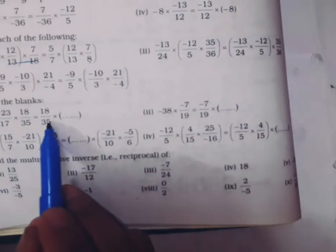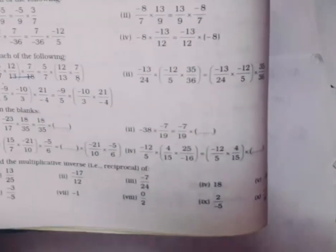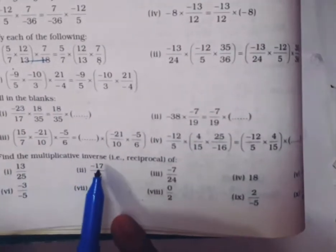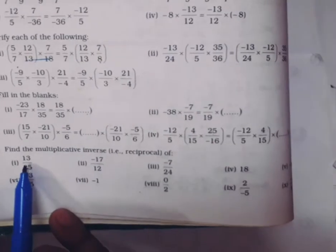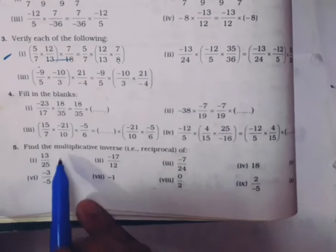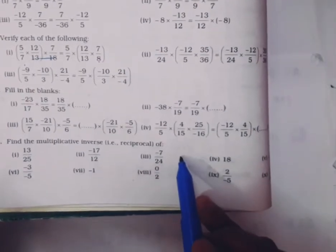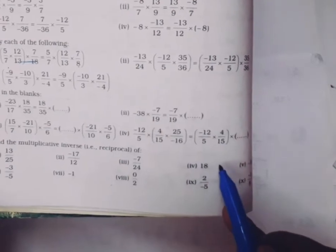Question number 4. Fill in the blanks. It's very easy. In fill in the blanks, two numbers are given here, 18 is given, this one is missing. You have to find the missing number. Question number 5, find the multiplicative inverse. That means the reciprocal of the given number will be its multiplicative inverse. 13/25, what will it be? 25/13. This will be -12/17. This will be -24/7. This will be 1/18. Likewise, you can do question number 4 and 5.